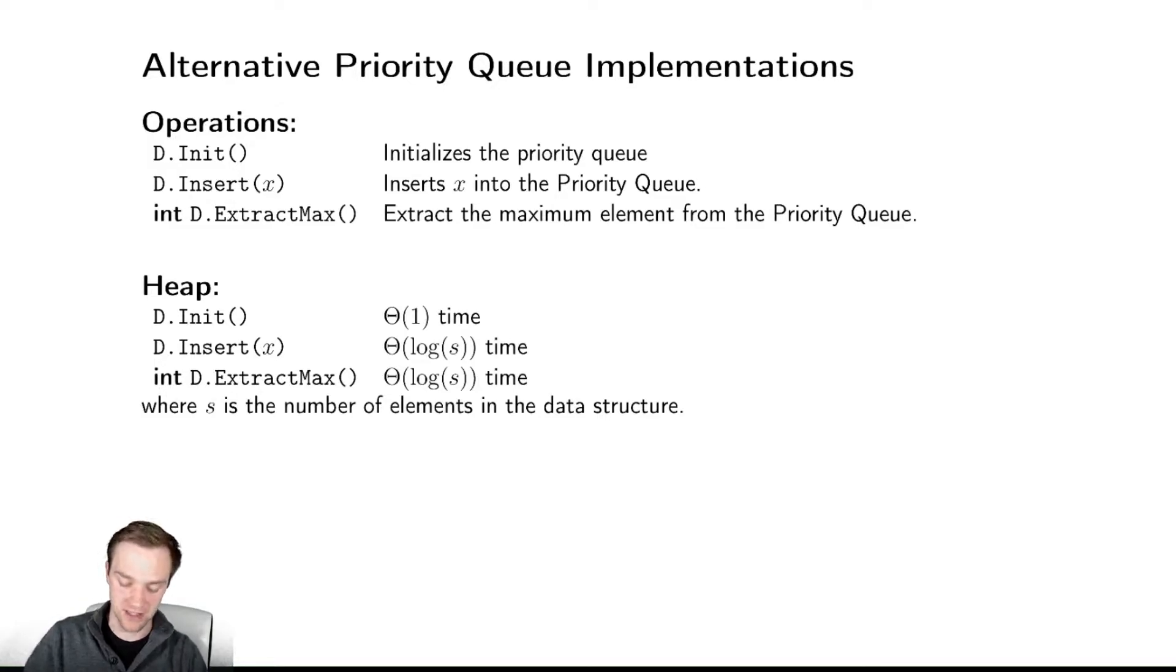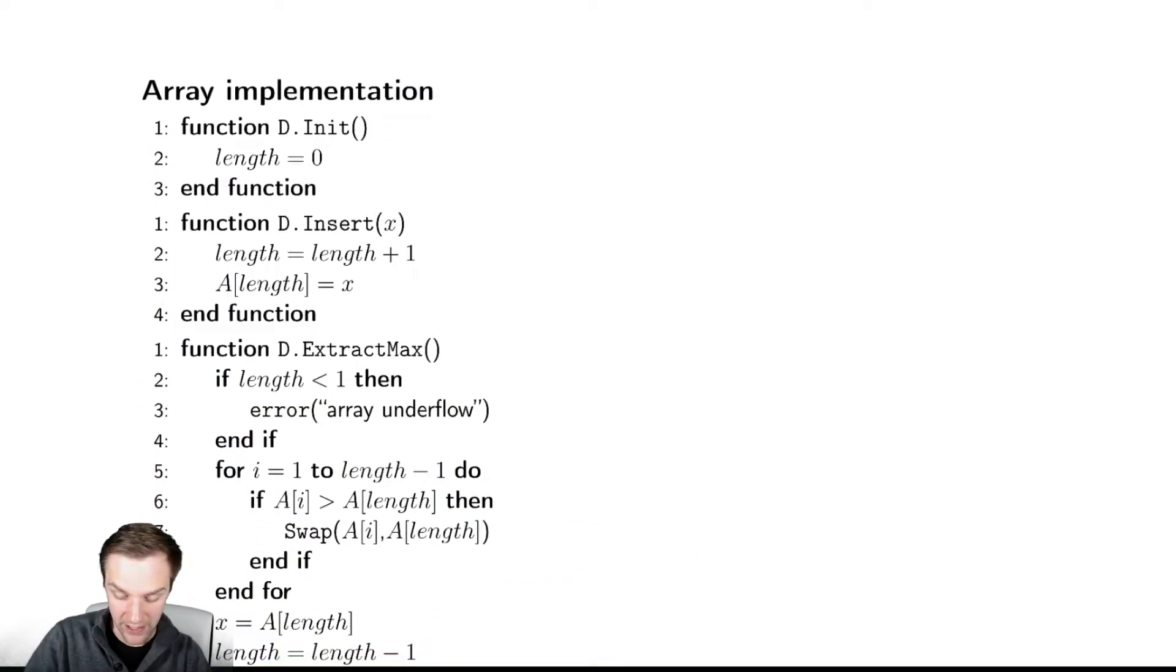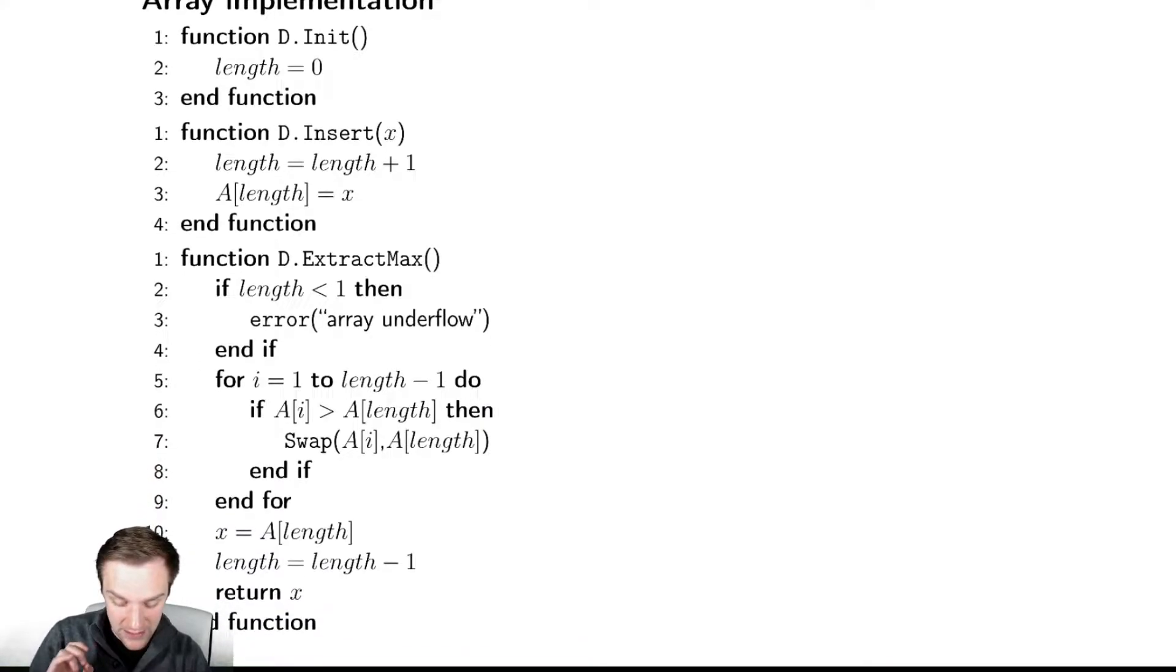Let's talk about some alternative implementations. Our first alternative implementation is just an array, which is very easy for some operations. Initialization is straightforward - we just set the length to zero. Insertion is also straightforward - you increase the size of the array and put the new element at the end. We could implement this using table doubling, and in that situation the method would still take constant time in the expected case.